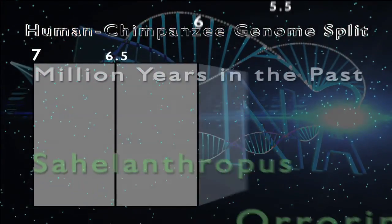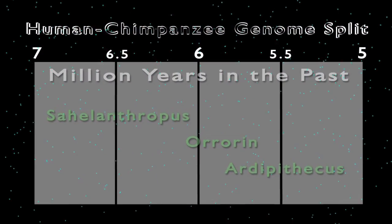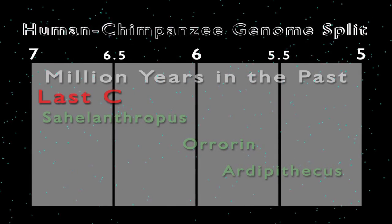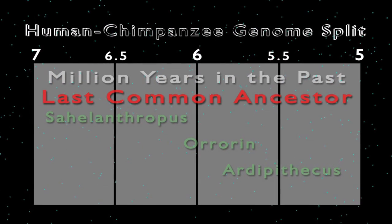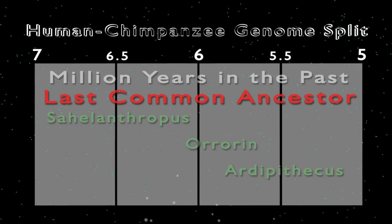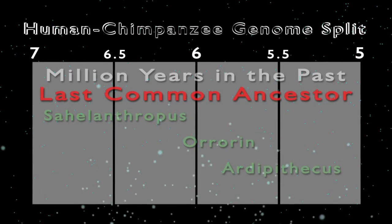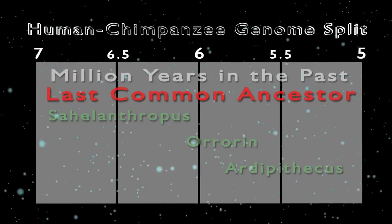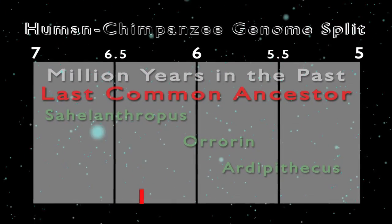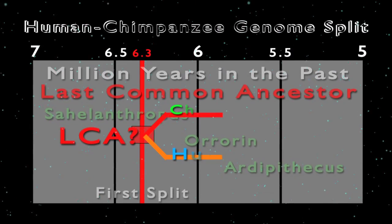Somewhere between 7 million years ago and 5 million years ago, we would find the last common ancestor of the chimpanzee line and the line of our human ancestor. Recent genetic research points to the genome split between chimpanzee and our human ancestor occurring around 6.3 million years ago.